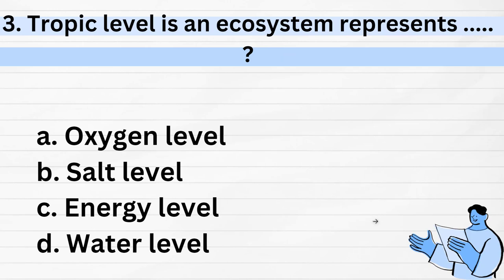Third question: Trophic level in an ecosystem — what does it represent? Options: oxygen level, salt level, energy level, water level. Trophic levels represent energy levels, and we can also use this to understand the food chain from primary consumer to secondary consumer.